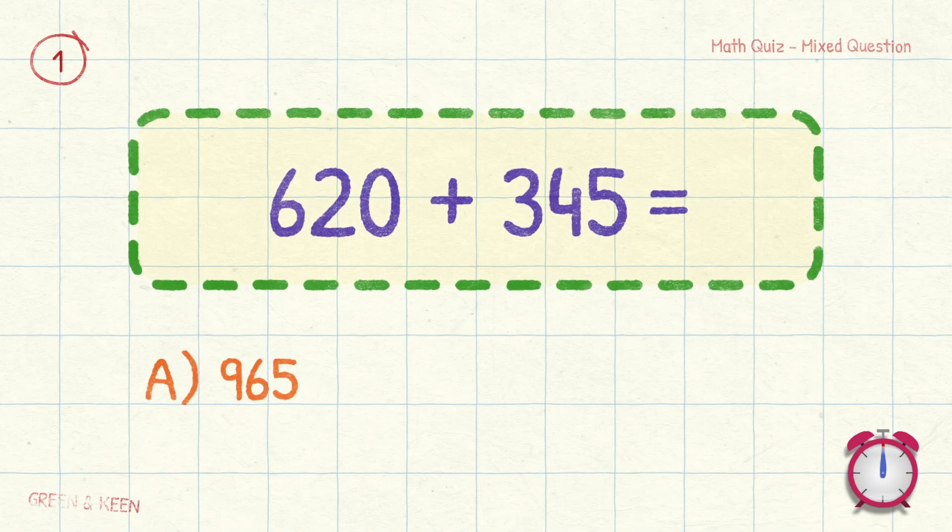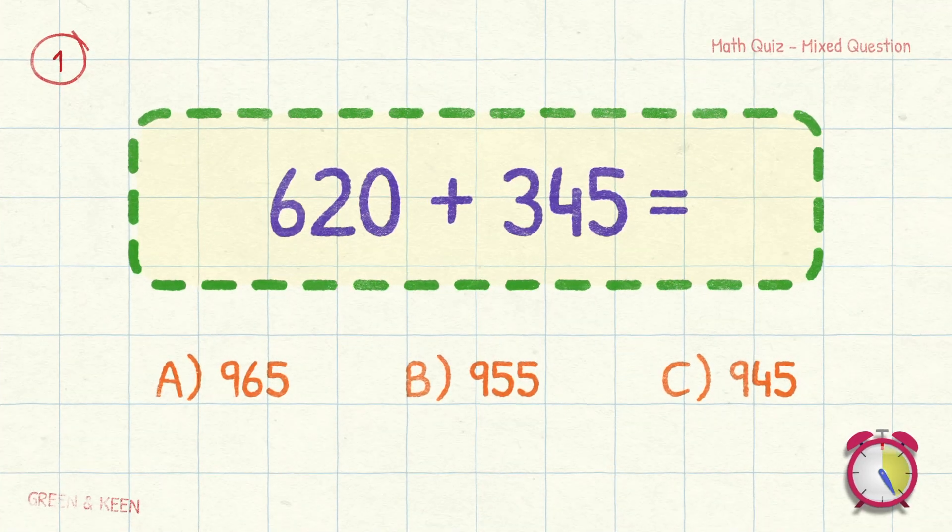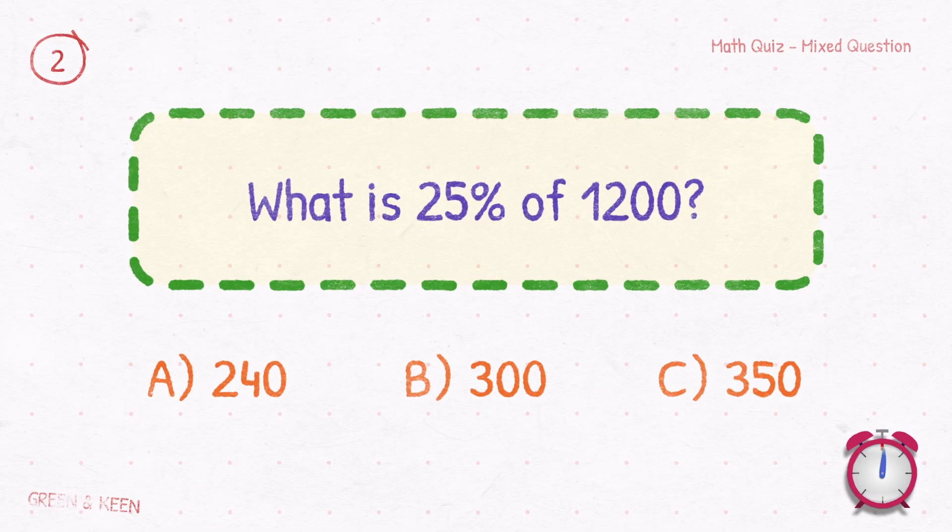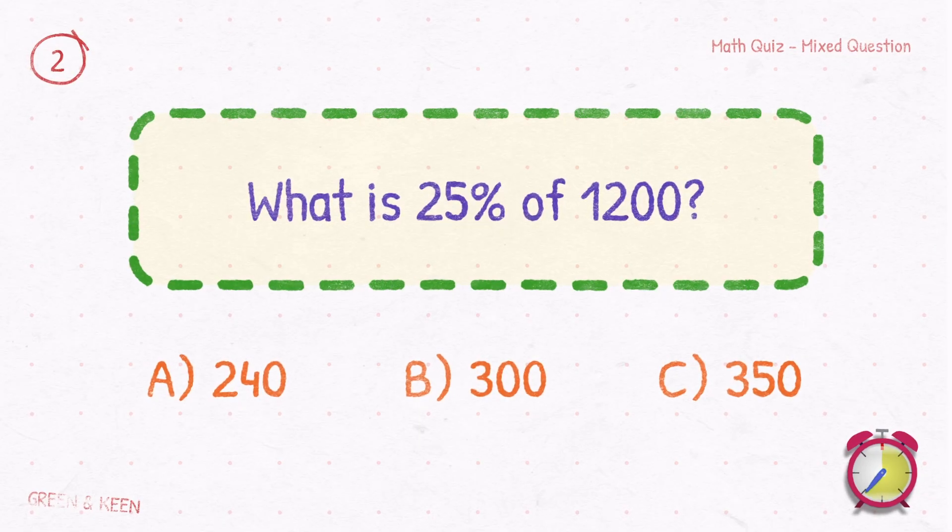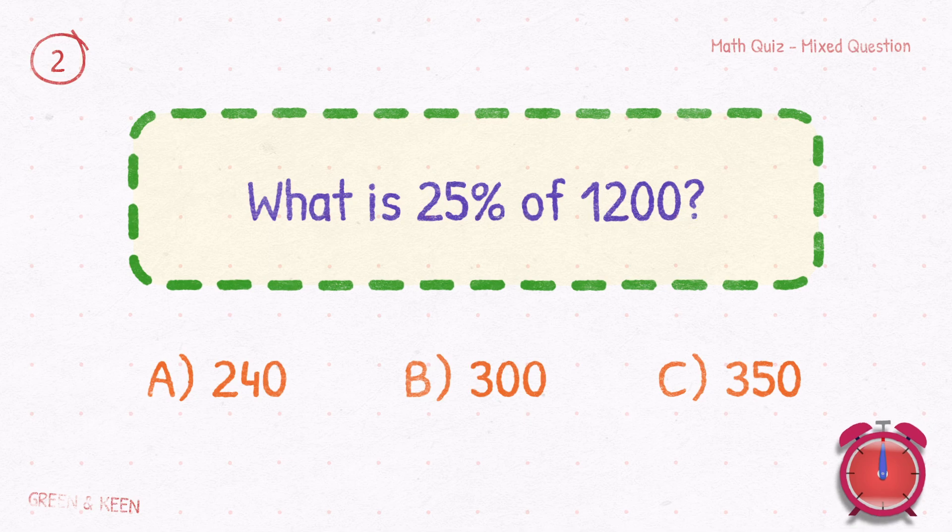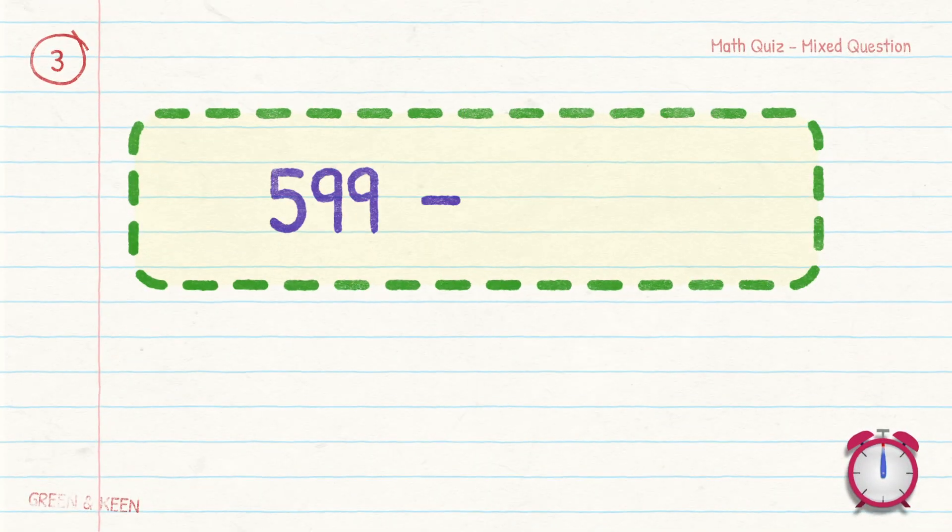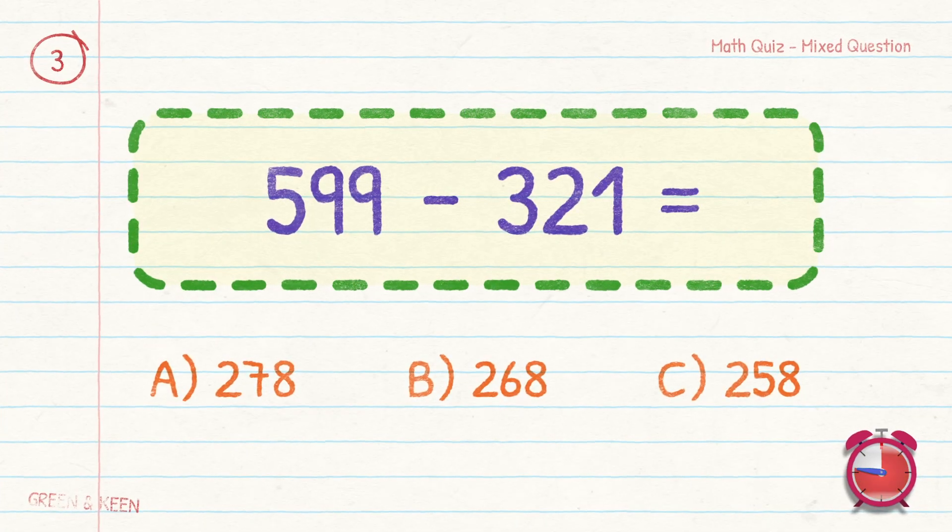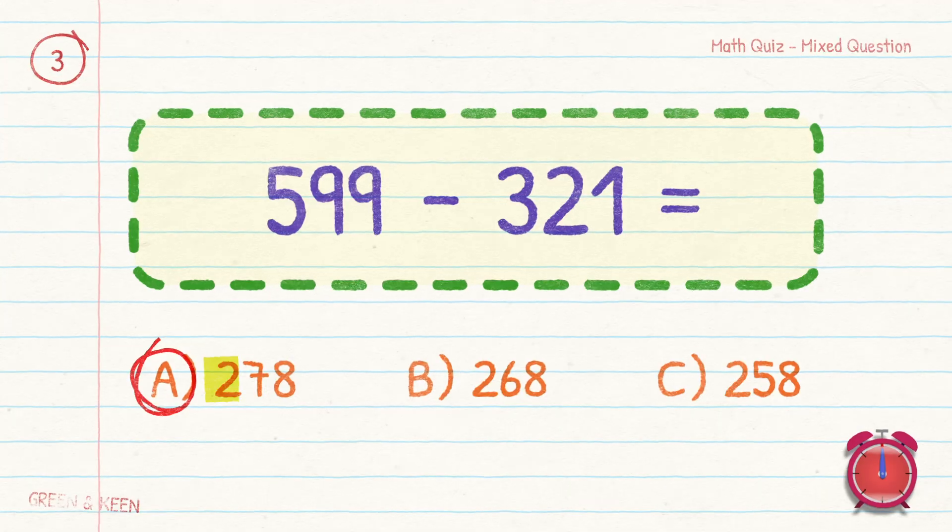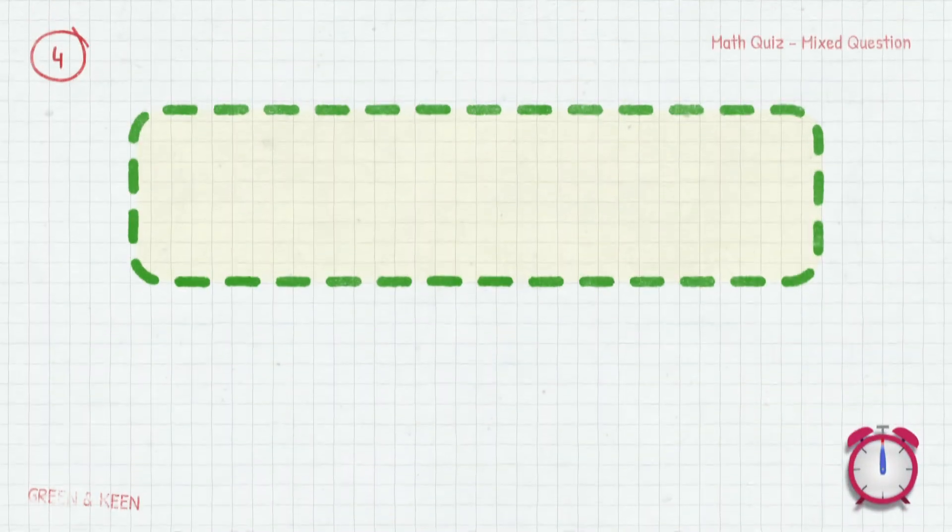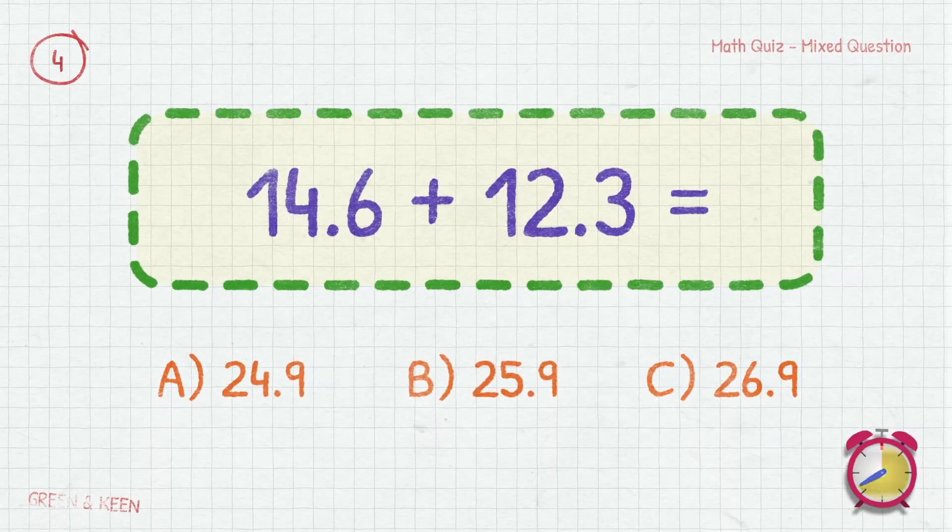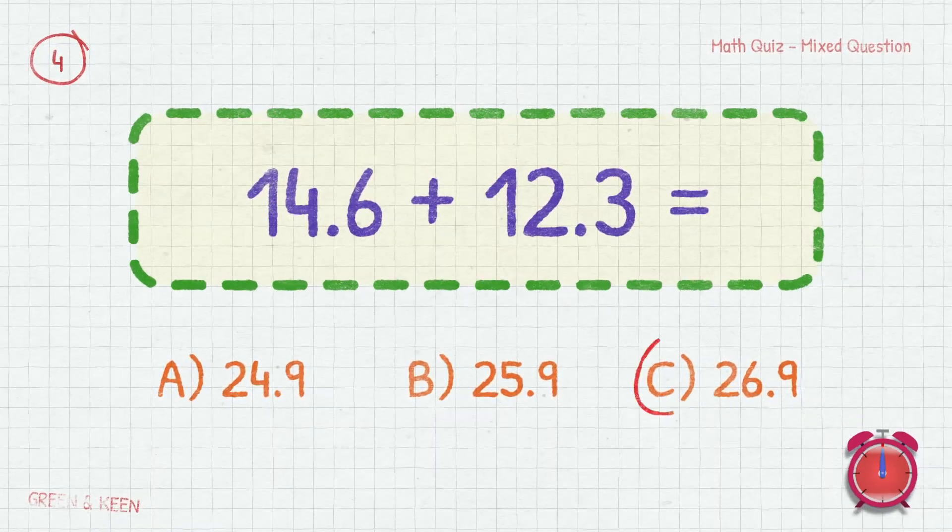620 plus 345 equals? The answer is 965. What is 25% of 1200? The answer is 300. 599 minus 321 equals? 278. 14.6 plus 12.3 equals? 26.9.